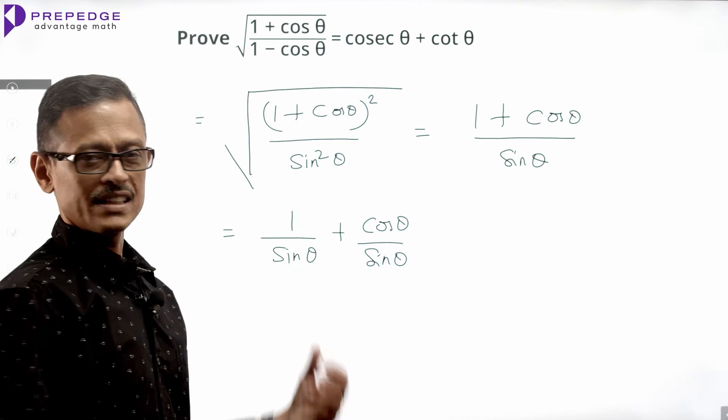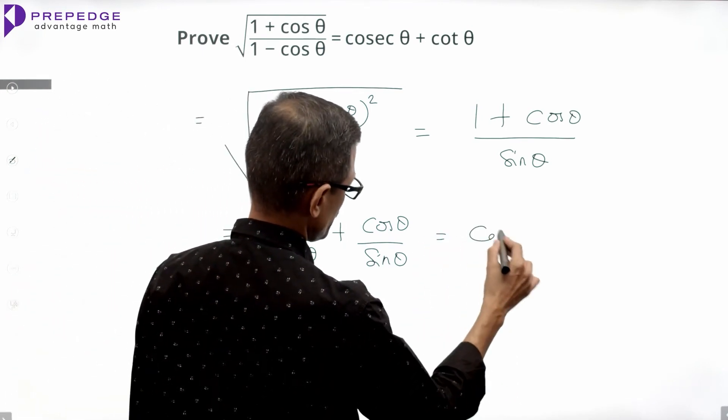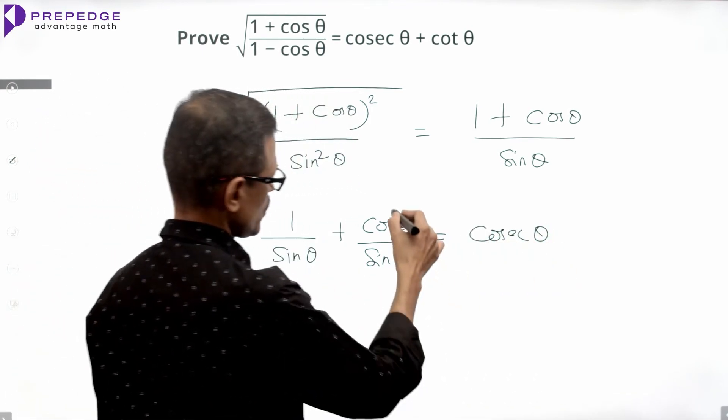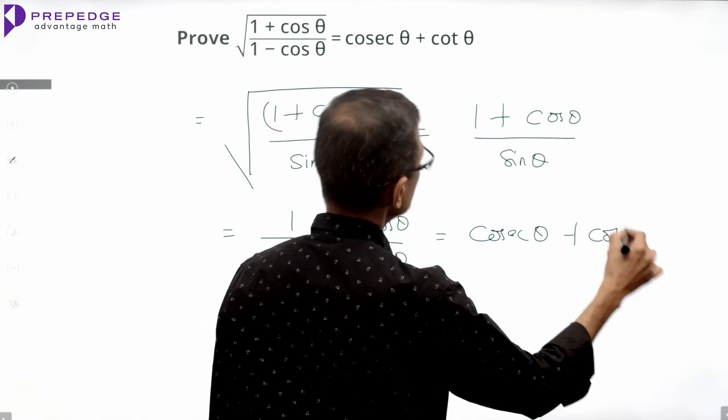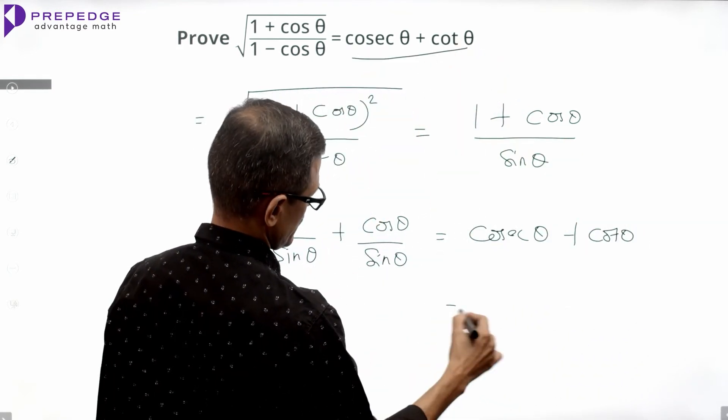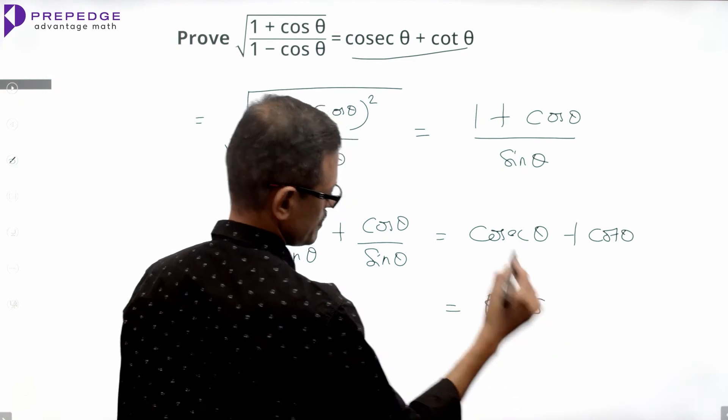1 by sin square theta equals cosecant square theta. Cos square theta by sin square theta equals cot square theta, which is what our RHS is.